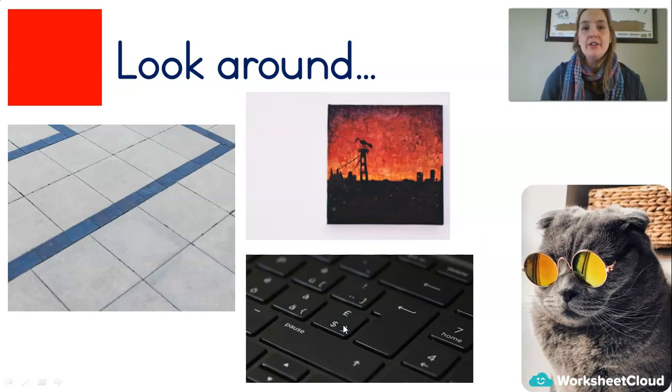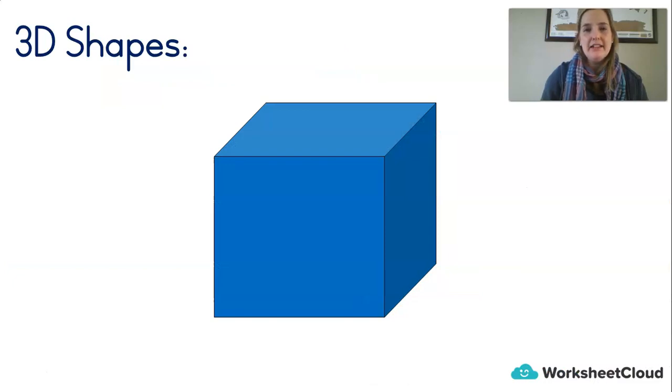If you look around you, you can see the tiles on your floor might be square. The pictures in your house, you might have a frame that's square. And even the numbers on your keyboard, if you look down, the letters and the numbers on your keyboard are in little squares. At least mine are. They look like the one on the screen now. There are squares all around us.